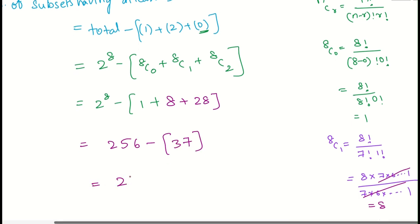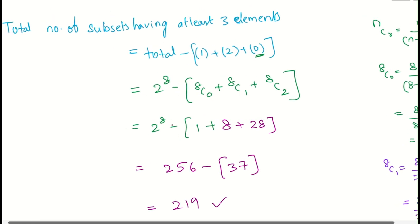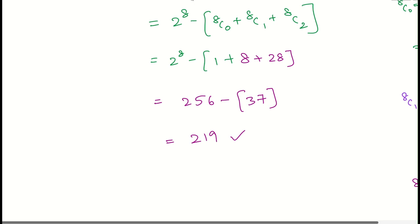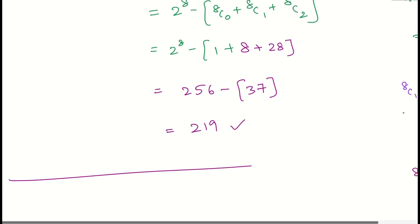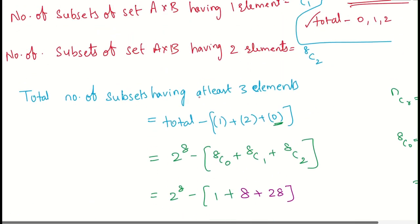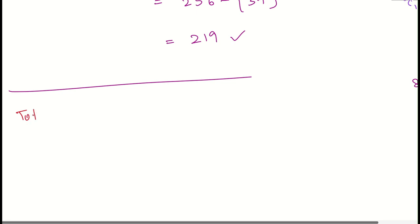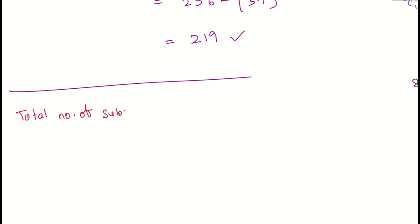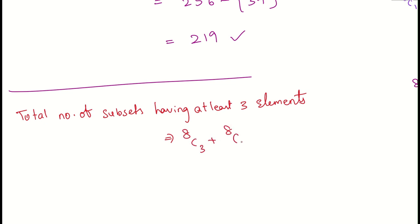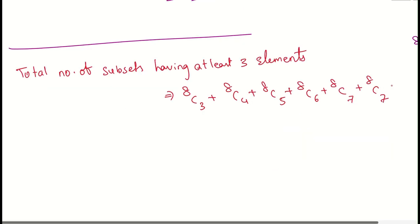Alternatively, you can directly compute subsets with at least three elements as: 8C3 + 8C4 + 8C5 + 8C6 + 8C7 + 8C8. This is the direct method instead of the complement approach. Let us verify this gives the same answer.